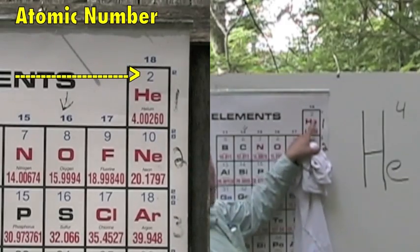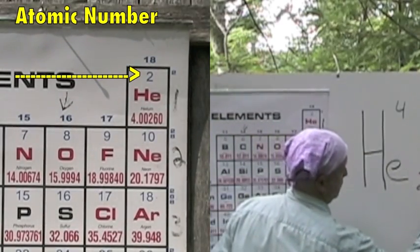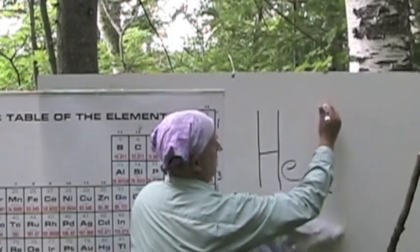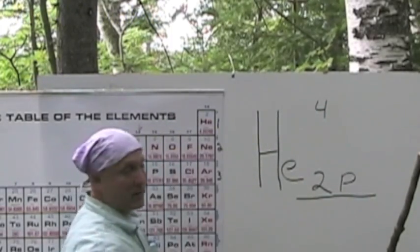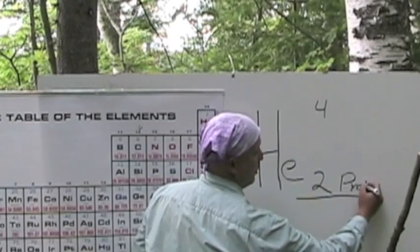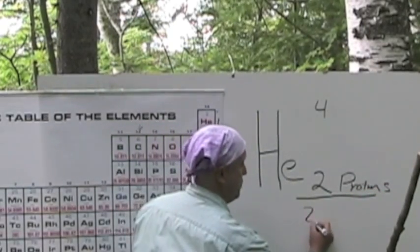Then we take the atomic number, which is 2. Subtract it out. And 2 is atomic number, so that's the number of protons. 2 protons. 4 minus 2 is 2 neutrons.